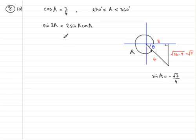Okay? So coming back over to here, we've got the sine 2A is 2 times the sine of A, which we now know is minus root 7 over 4. So mark that in as minus root 7 over 4 times the cos of A, which is 3 quarters. So 3 quarters in there.